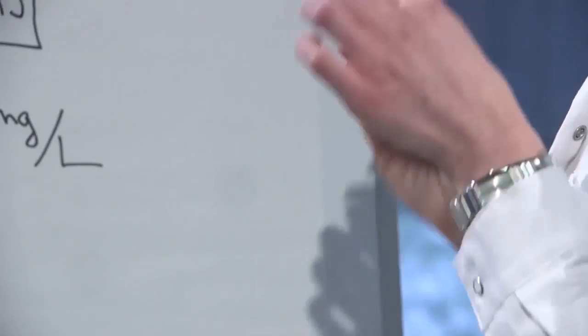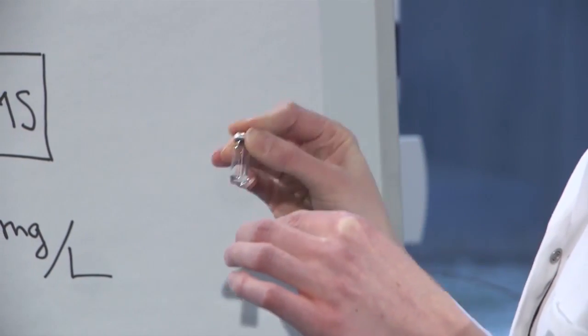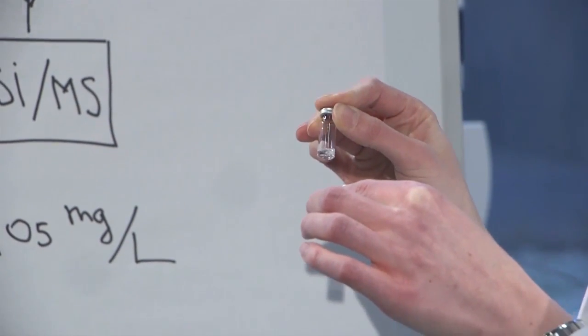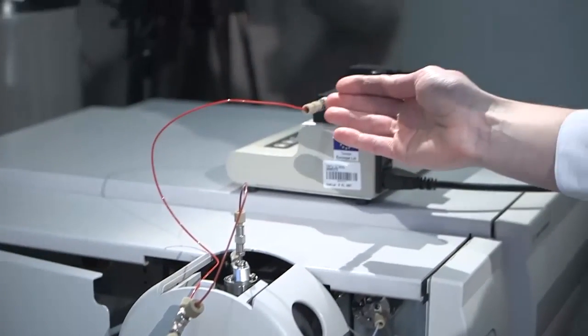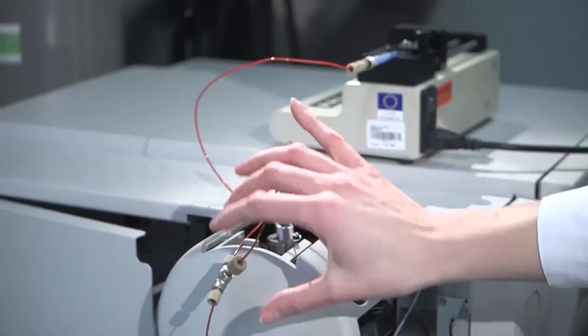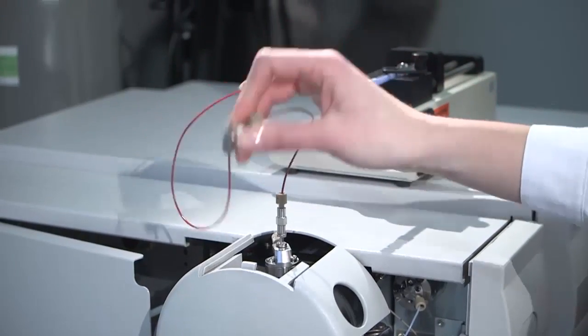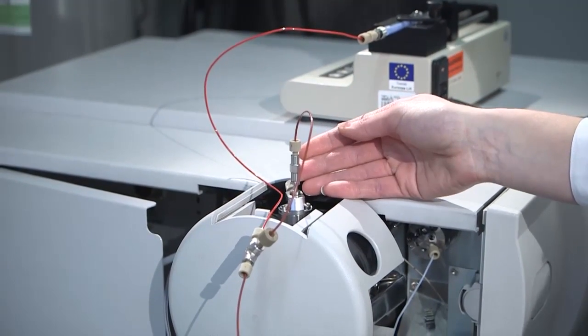Another thing that we need are the samples that we are going to inject from the LC part. Today we are going to analyze two samples: the tomato extract and the garlic extract, and we also need a solvent injection to compare these extracts with. In practice, we will connect the effluent from the LC with the standard solution that is being infused in a T-piece and direct this mixture to the ESI source.